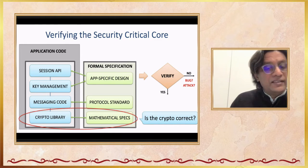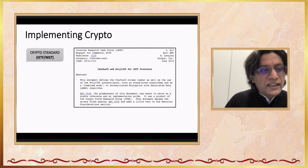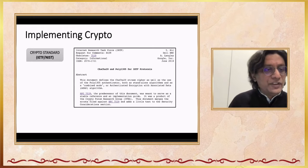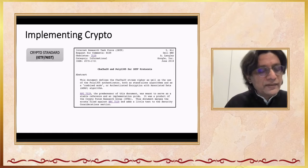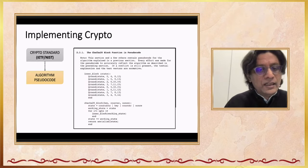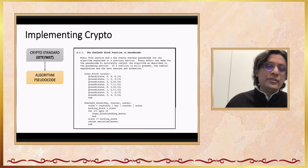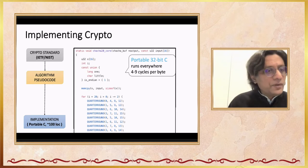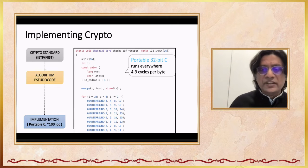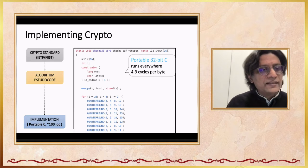Let's focus on the lower layer: how to verify the crypto library against its mathematical spec. How does one implement crypto in practice today? You start from a spec given by NIST or the IETF. For example, here is the ChaCha20-Poly1305 spec from the IETF, which has pseudocode in Python-like syntax. Looking at the pseudocode, you can implement it in C in about 100 lines — portable 32-bit C that will run on any platform. It's reasonably fast, taking about four to nine cycles to encrypt a byte on a modern machine.